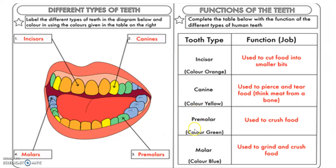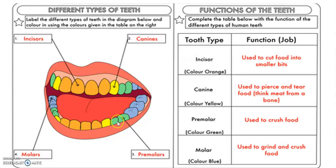Teeth are of four types in our mouth: incisors, canines, pre-molars and molars. Incisors are responsible for cutting the food into smaller bits. Canines are called tearing teeth, responsible for tearing flesh or meat. Pre-molars are used for crushing the food, and molars are responsible for grinding and crushing the food further.